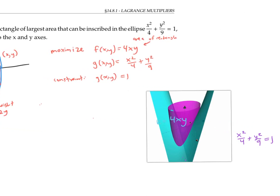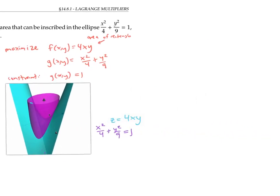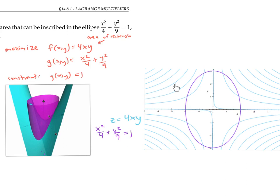Now let's look at a two-dimensional picture of the same thing. In this picture, the light blue curves represent the level curves of our function F — that is, the curves of constant height for our blue surface. The magenta ellipse is our original ellipse, the graph of g(x, y) = 1, our constraint condition in two dimensions. The magenta curve is like a trail projected onto the xy-plane, and the blue curves are like the contour lines of a mountain.